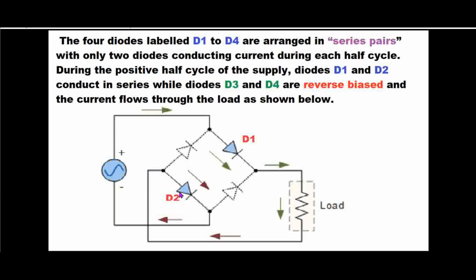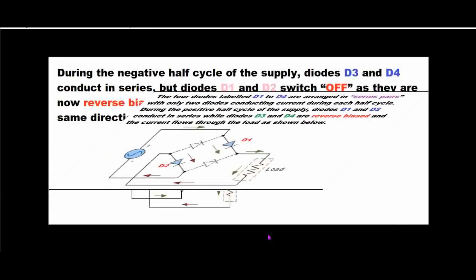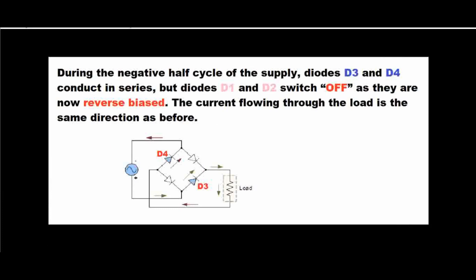During the negative half cycle, diode three and diode four are forward biased, so they will conduct our current. But diode one and diode two will be off — they are now reverse biased. The current will now flow from our AC supply, through diode three, through the load, back through diode four, and then back to our AC supply. So diode three and diode four will be forward biased, while diode one and diode two will be reverse biased.